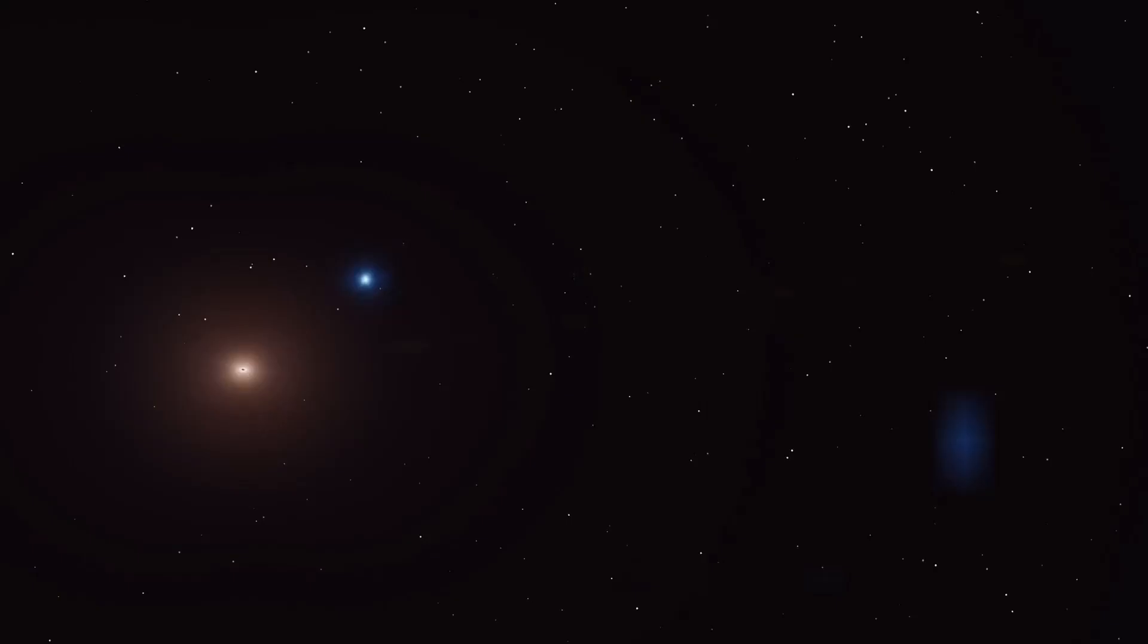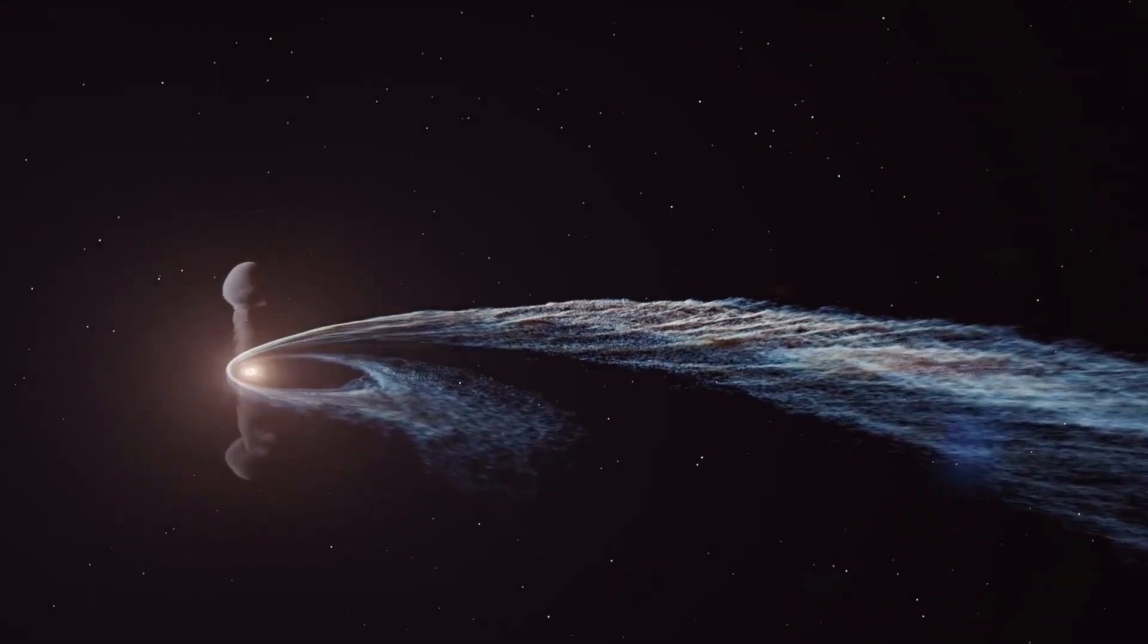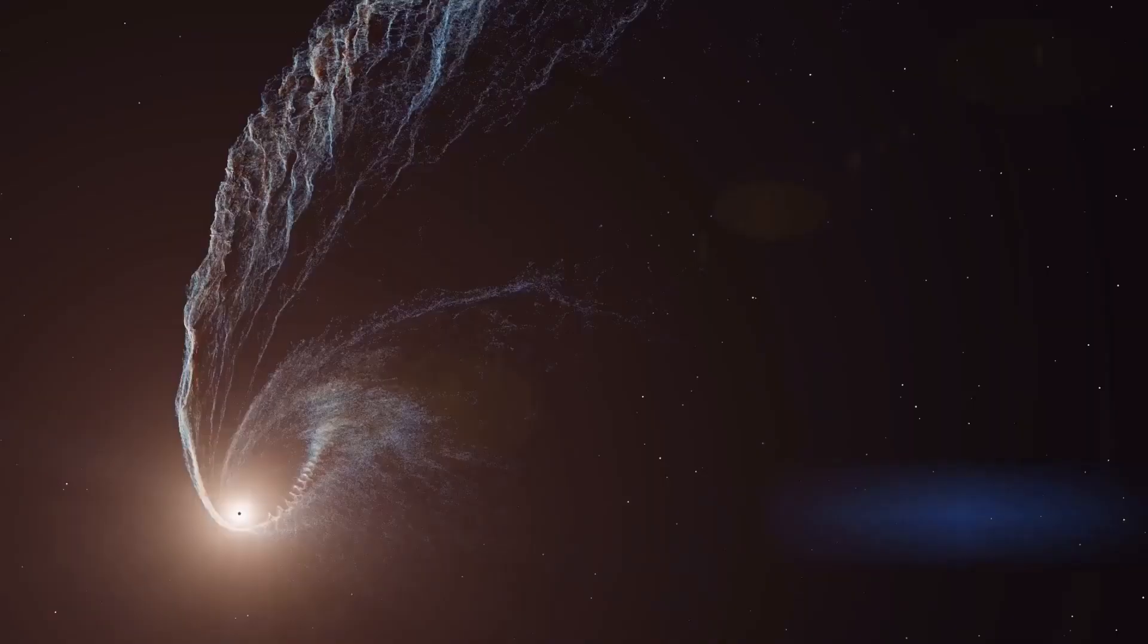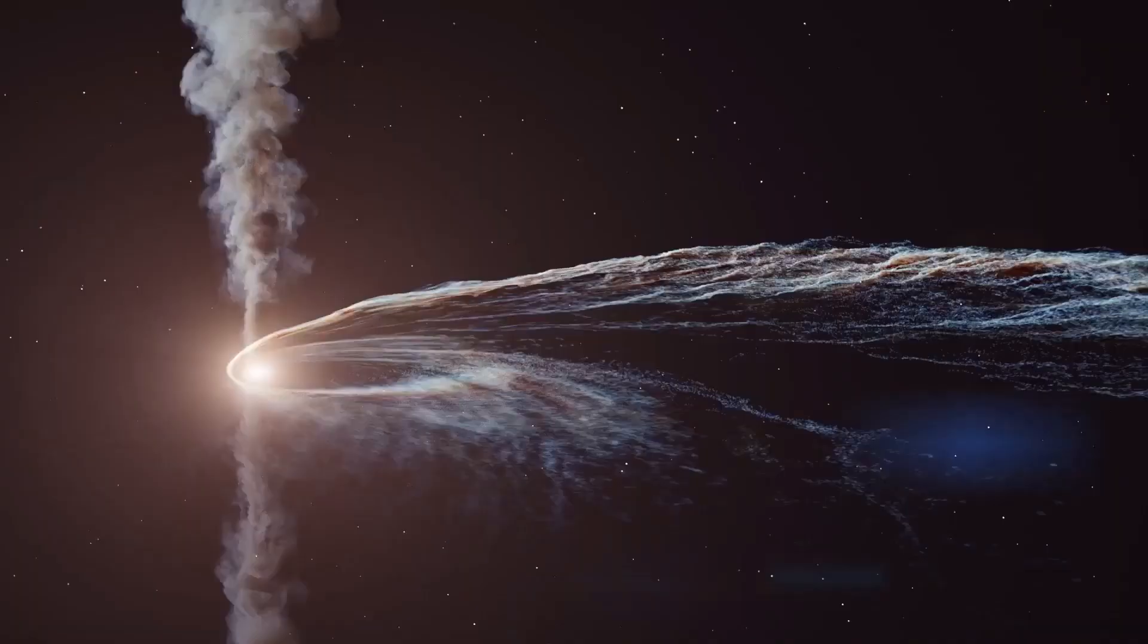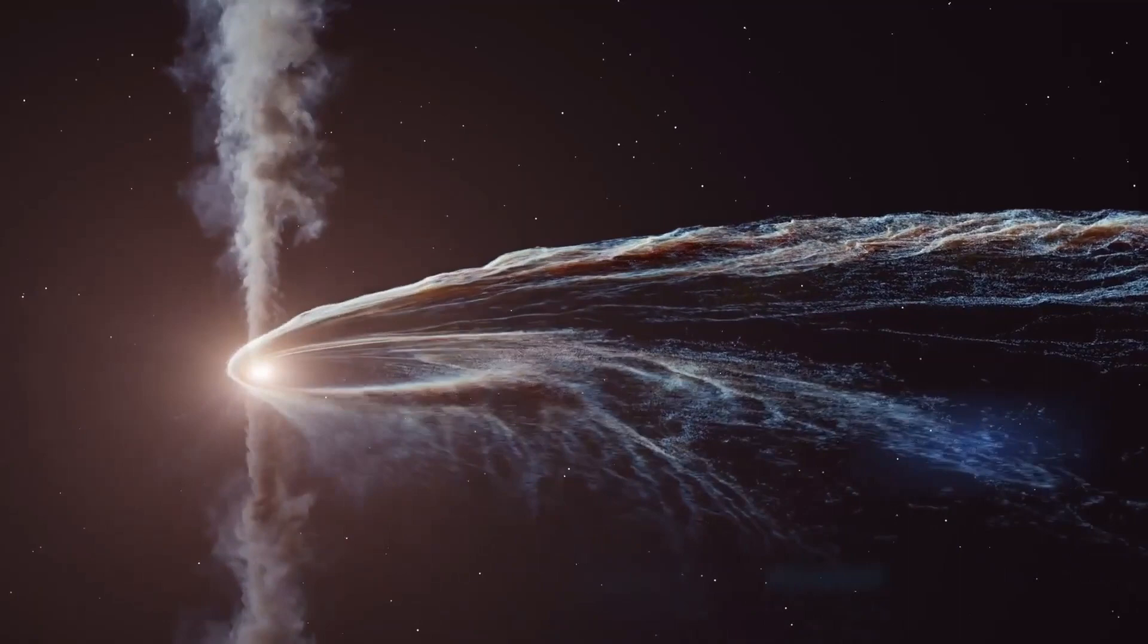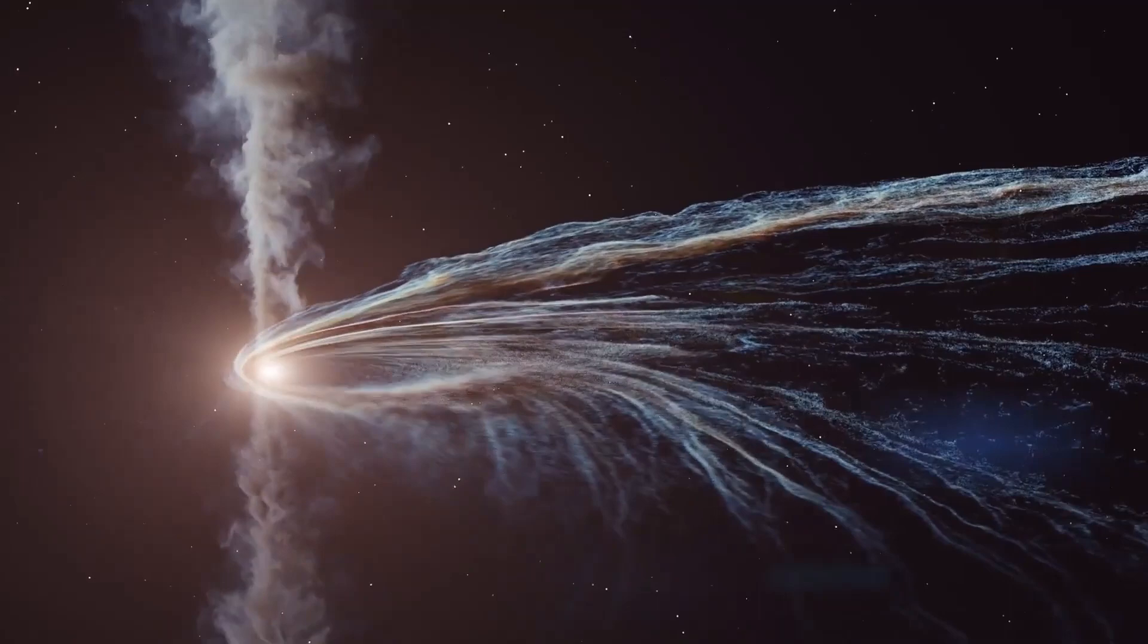Why black holes are the scariest things in the universe. A black hole is a region of spacetime where gravity is so strong that nothing, no particles or even electromagnetic radiation such as light, can escape from it. The theory of general relativity predicts that a sufficiently compact mass can deform spacetime to form a black hole.